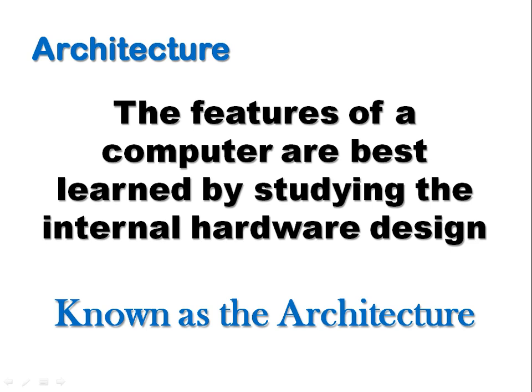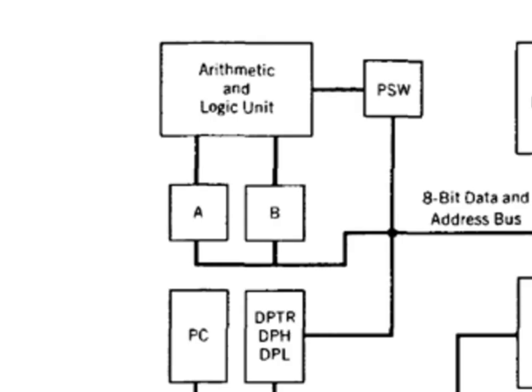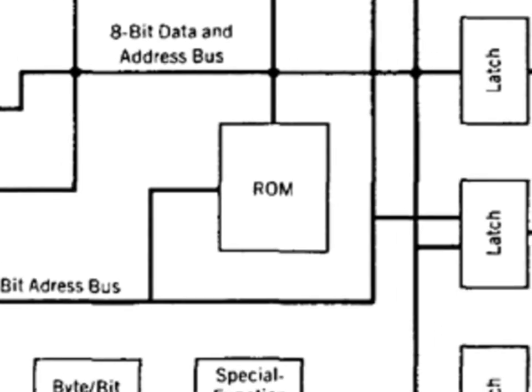We are here interested in talking about the 8051 architecture, so we will be trying to understand the internal hardware design of 8051. Let us begin with the 8051 core as proposed by Intel. We can see the basic idea of the arithmetic logic unit of the core. It is proposed that there should be an internal ROM, read-only memory, of 4 kilobytes.